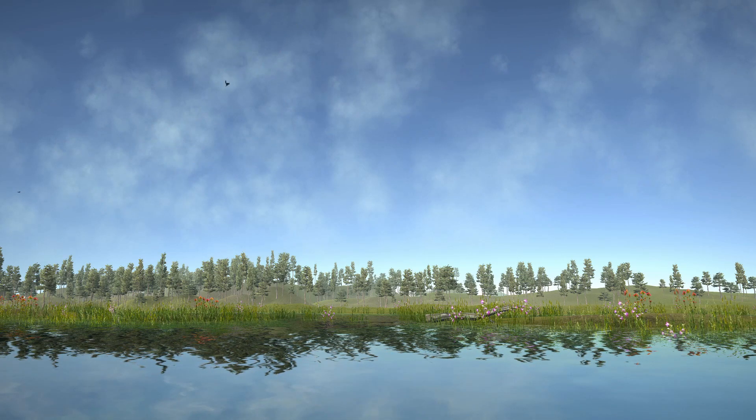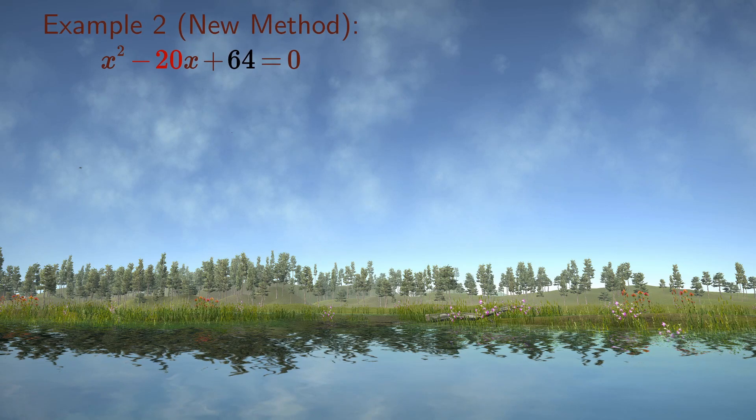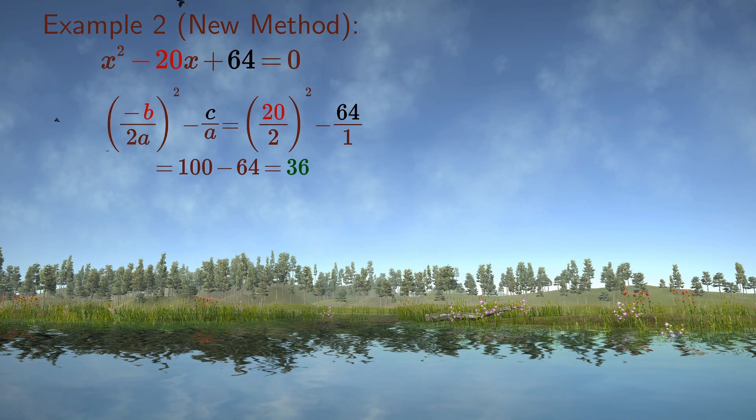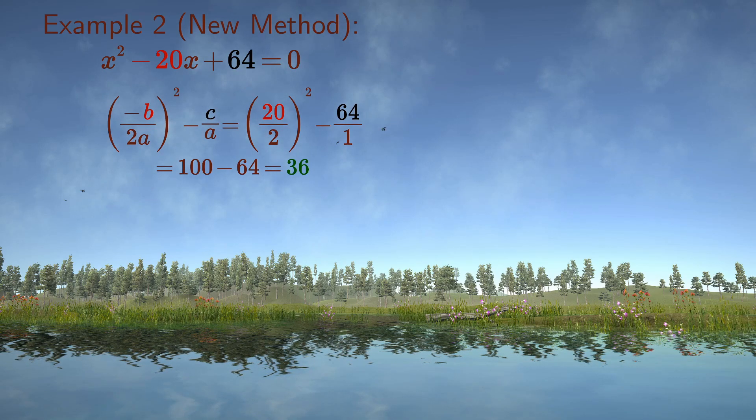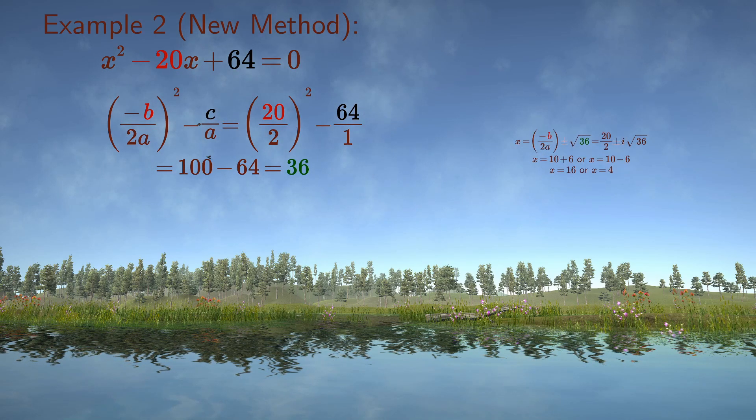For the second example we take the square of minus b over 2a as 10 squared, or 100. We subtract 64 to give us 36, the square roots of which are plus 6 and minus 6.